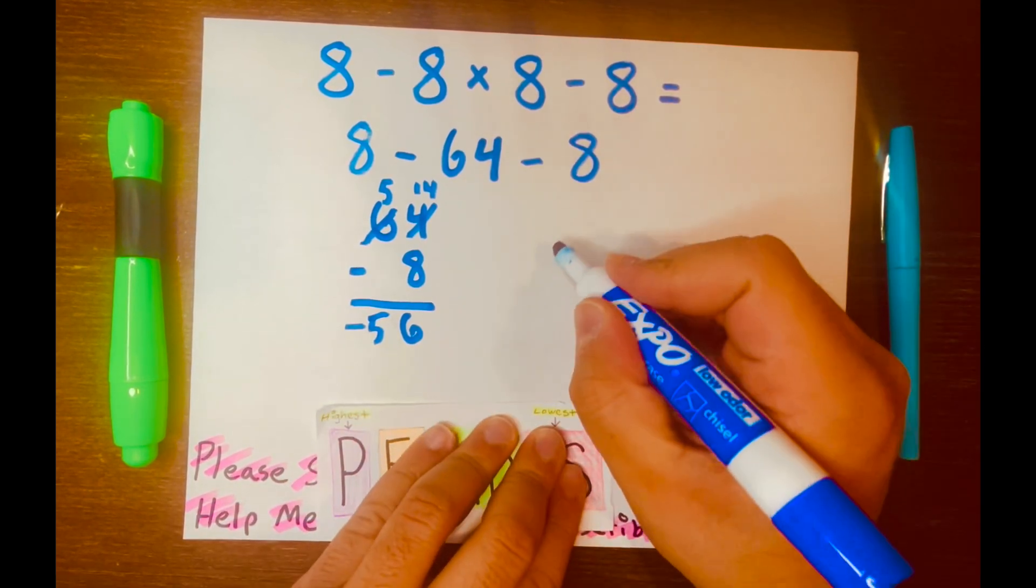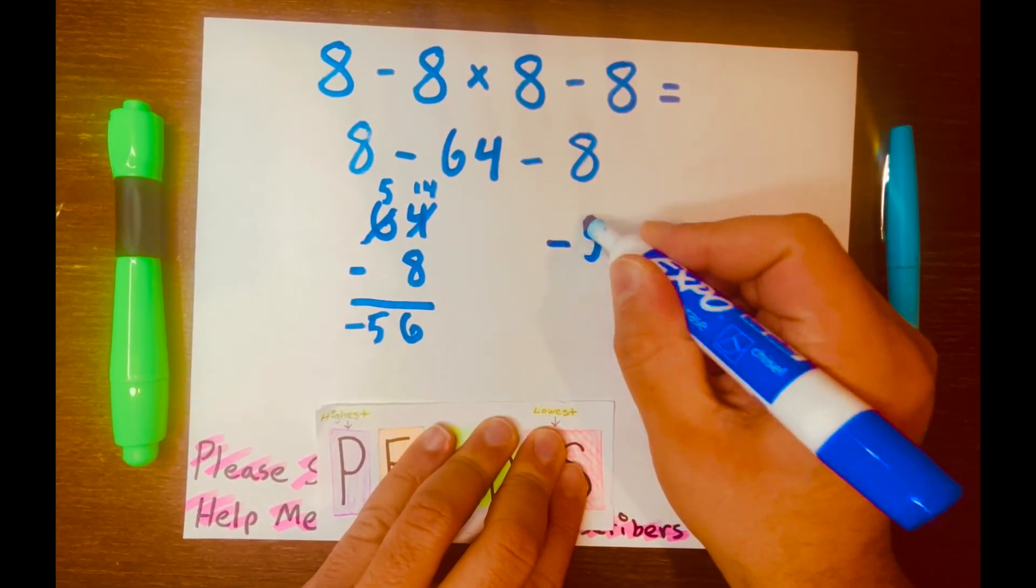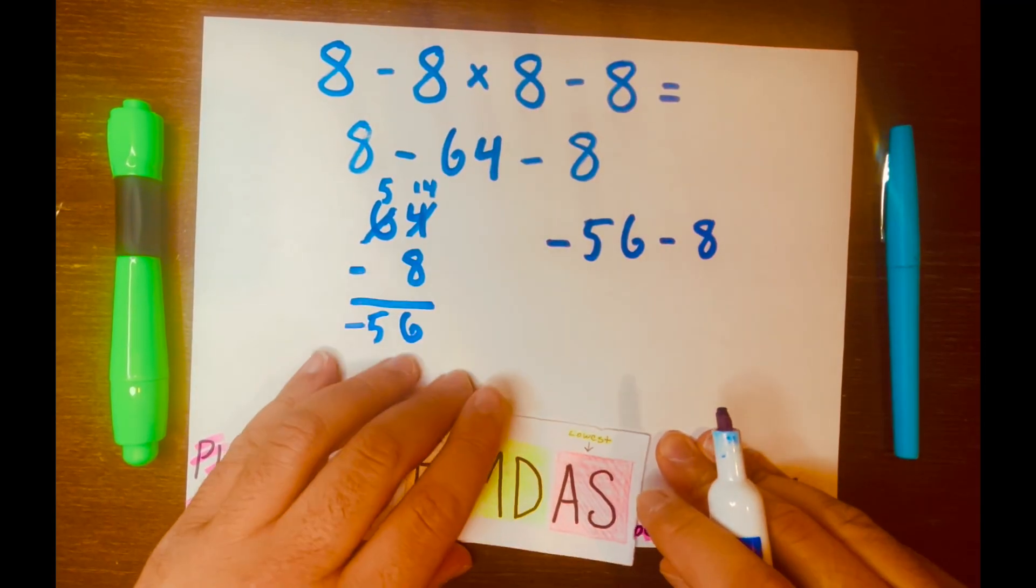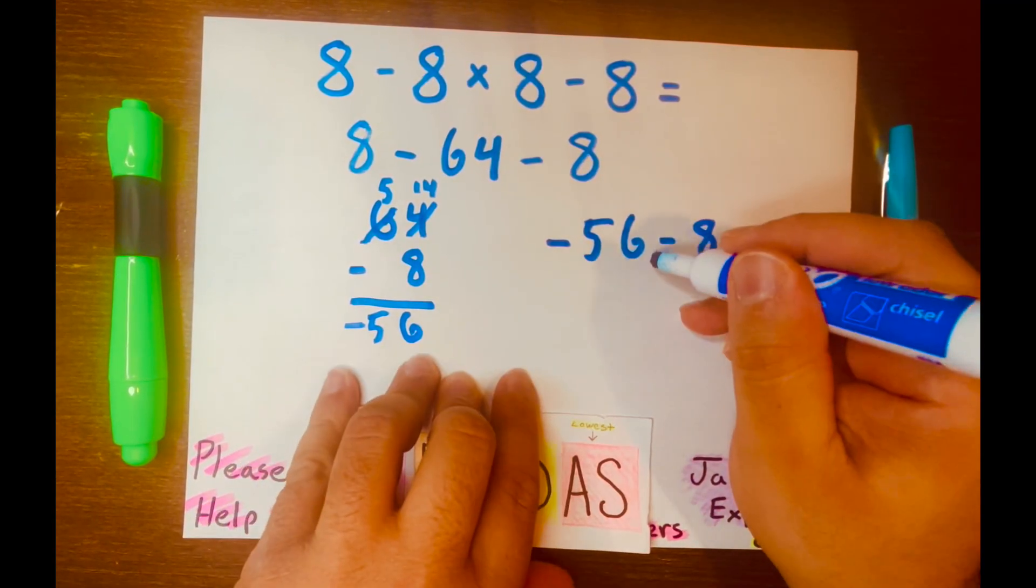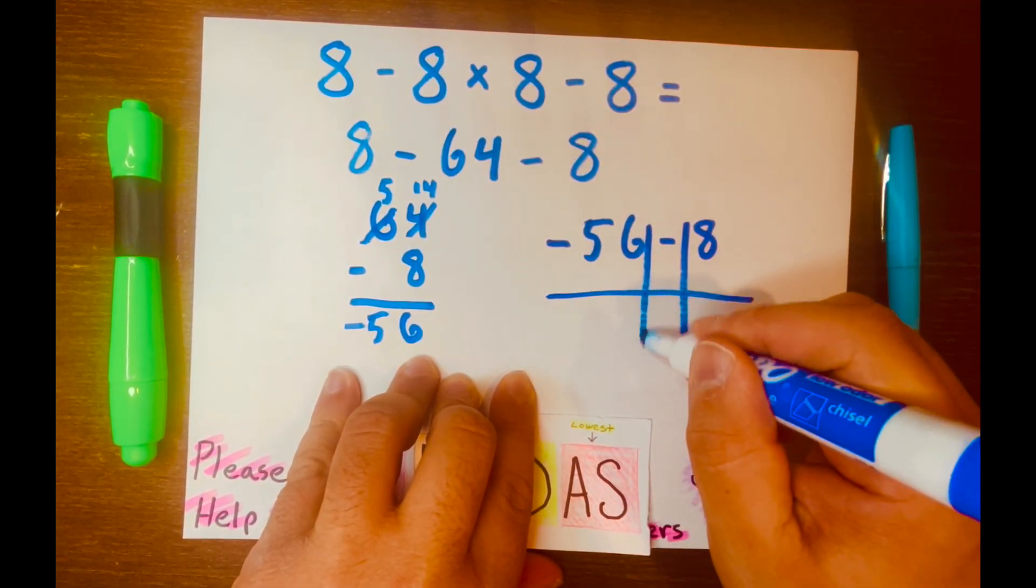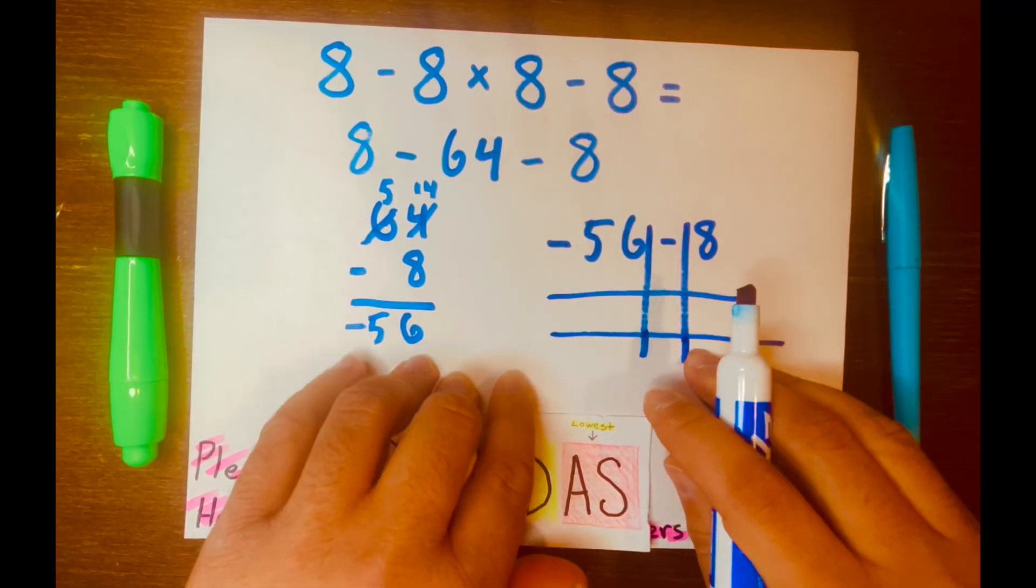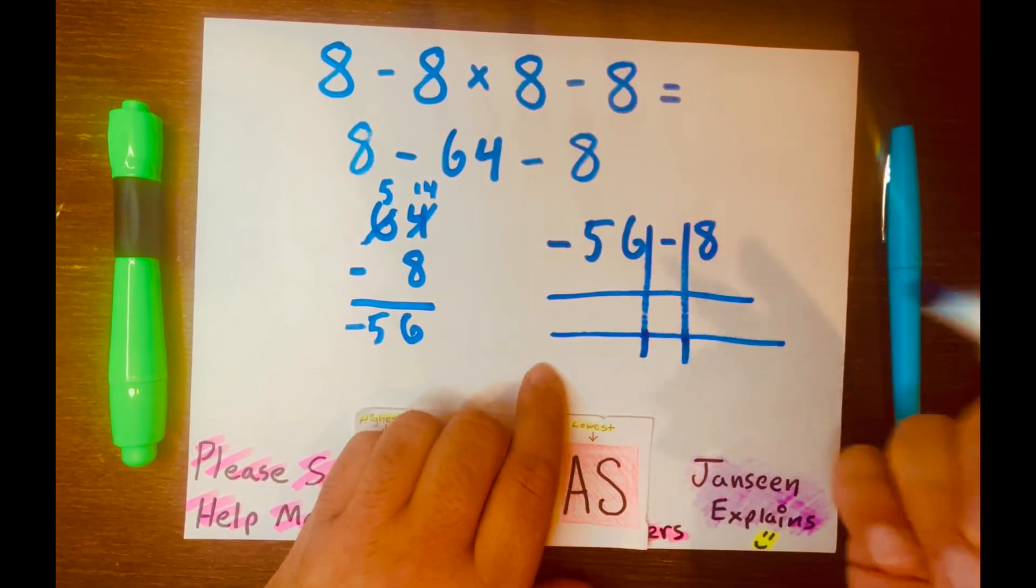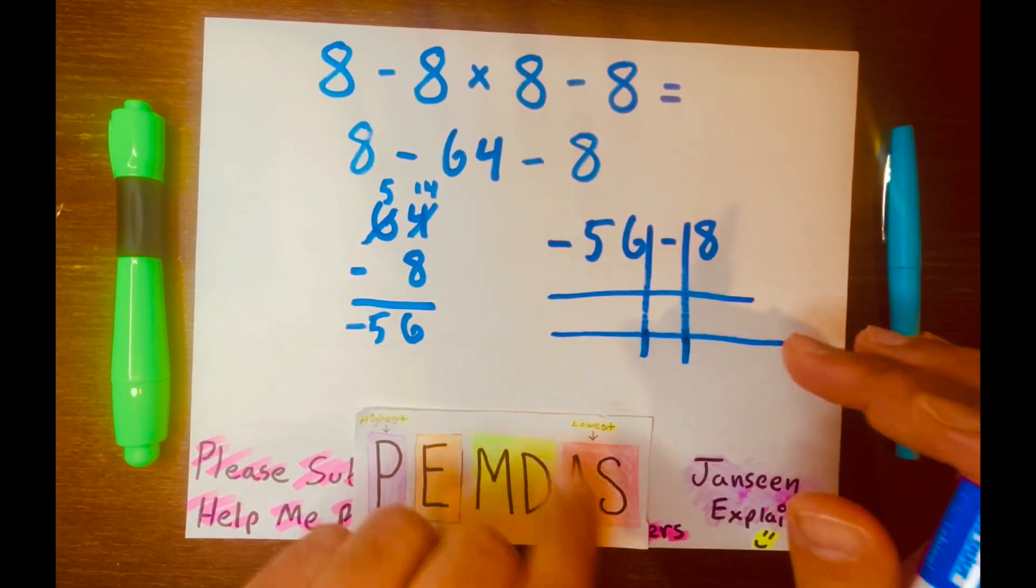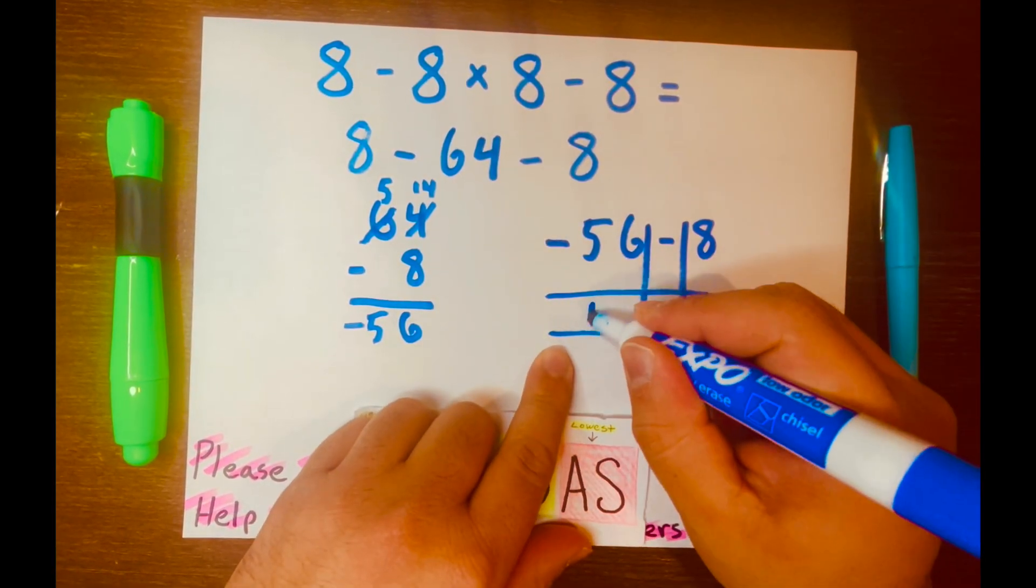Now we just have to subtract negative 56 minus 8. And let's use that table I showed you all before, the keep, change, change rule. When you are subtracting integers, the 8 and the negative 56, they both are integers. So it's keep.